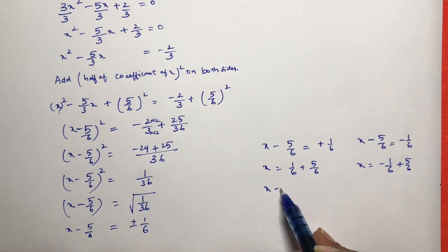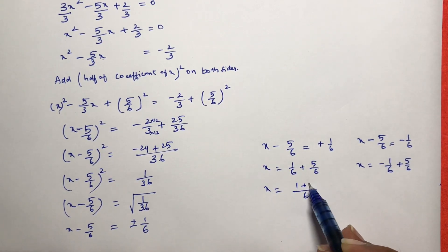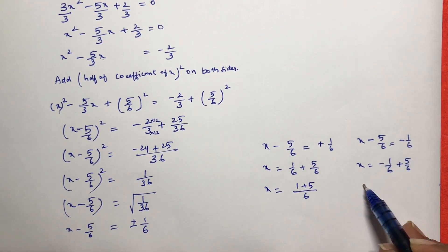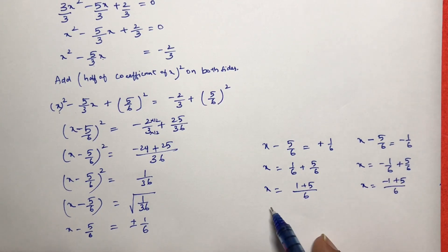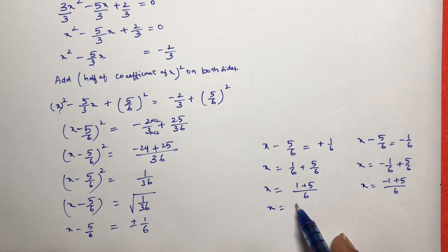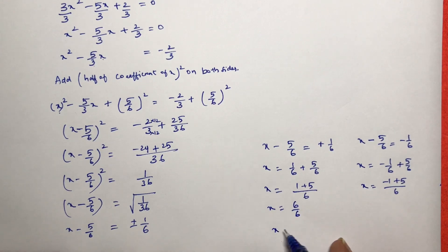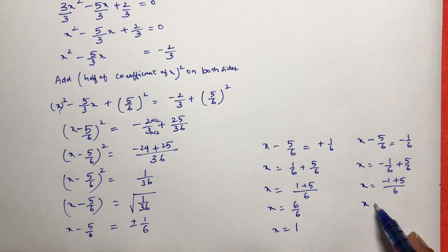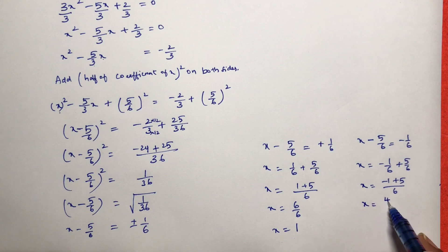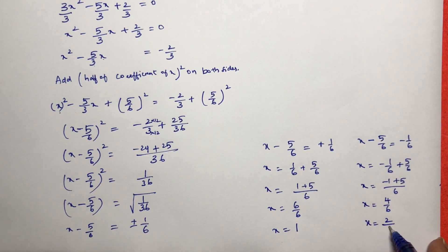For the first case, LCM is 6: x equals 1 plus 5 over 6, which is 6/6, so x equals 1. For the second case, x equals minus 1 plus 5 over 6, which is 4/6, therefore x equals 2/3.